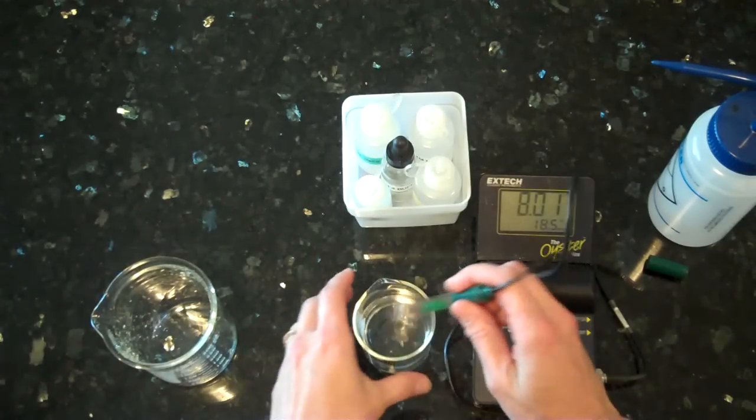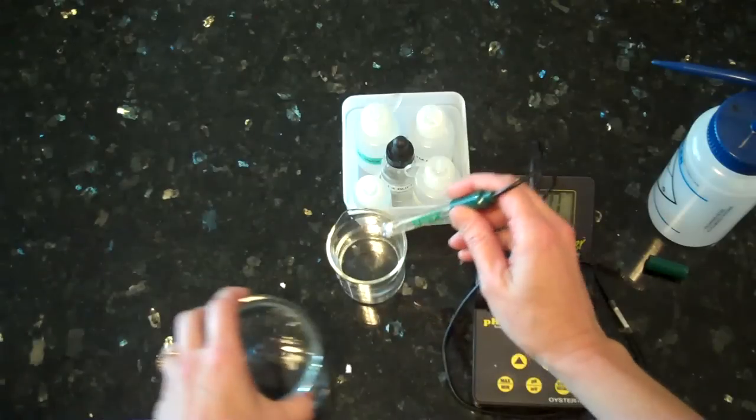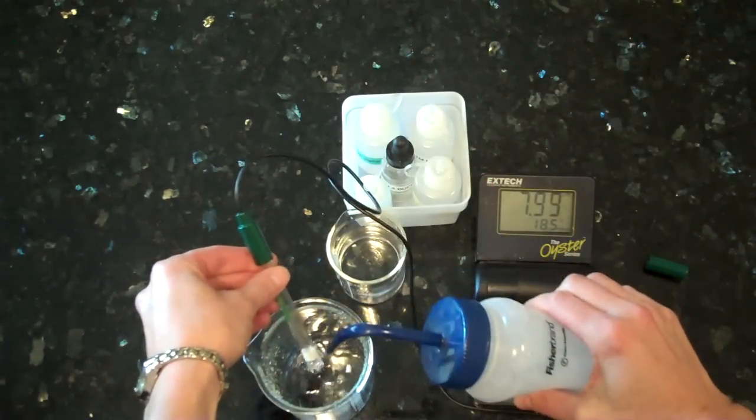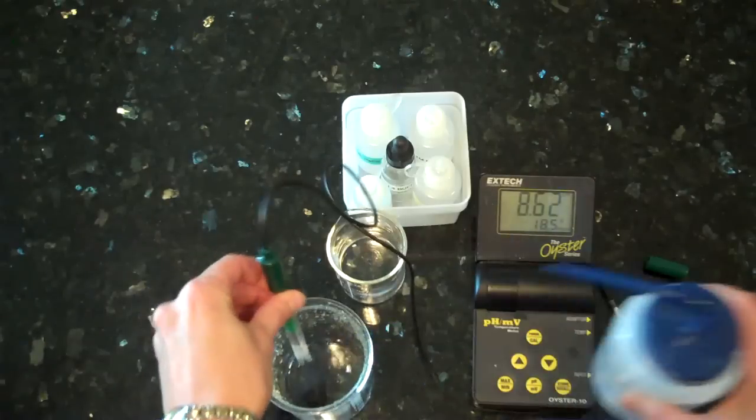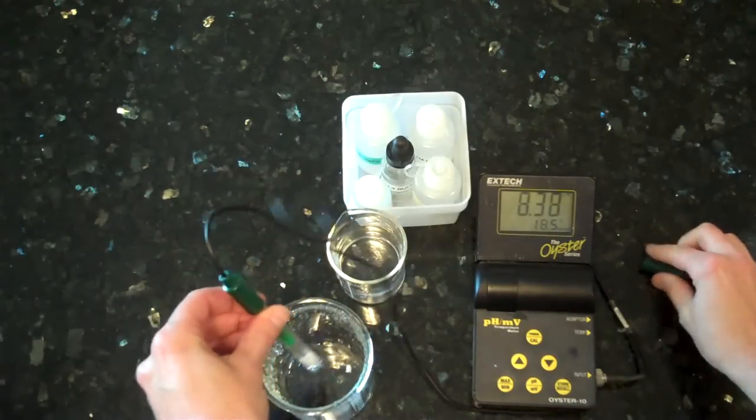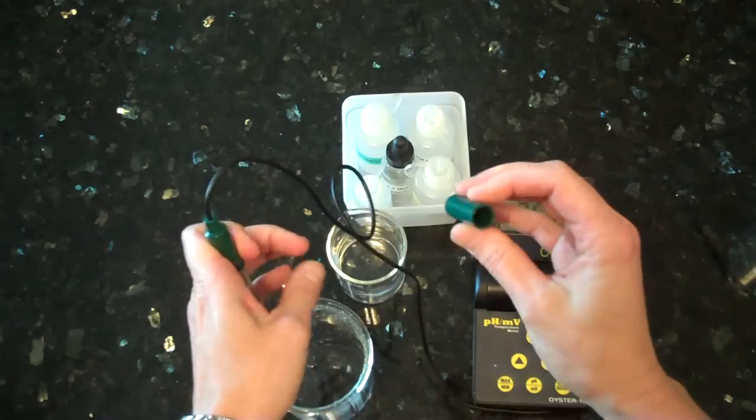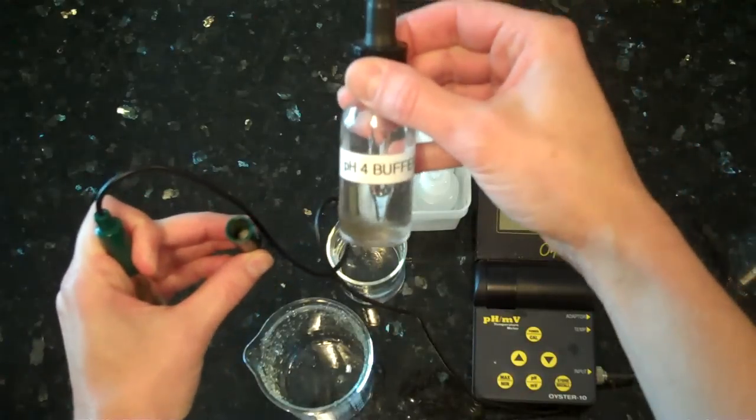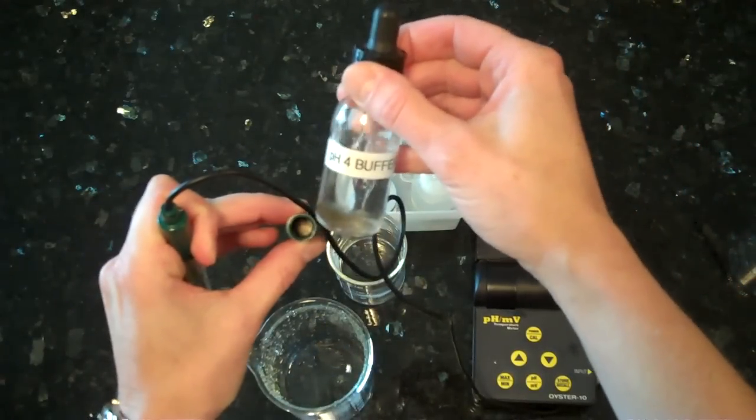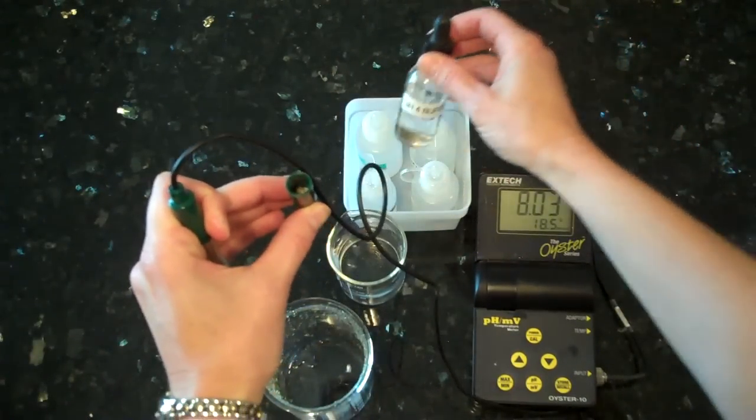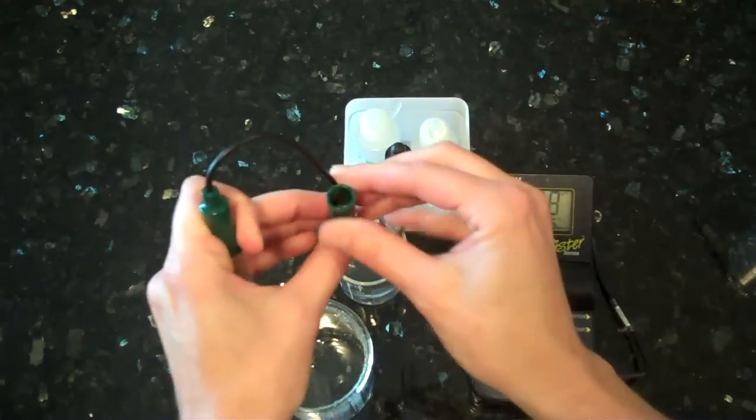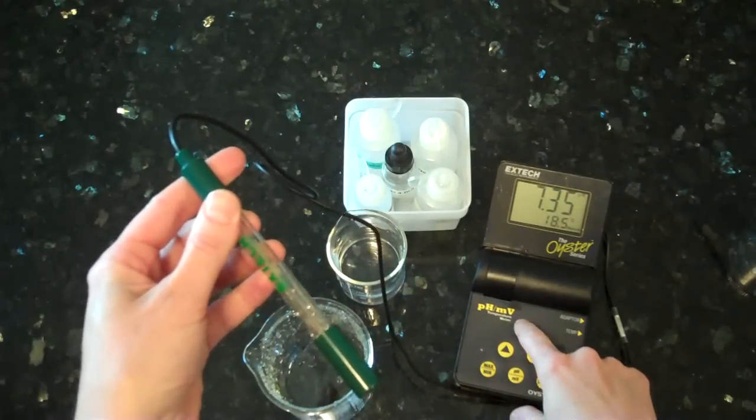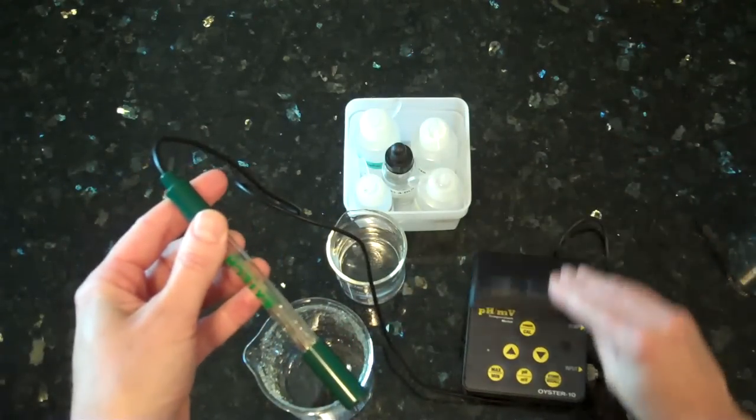the pH meter, you simply take out the probe. You need to rinse it off. I am doing all the rinsing into a waste beaker. You would then take the cap and add a drop or two of pH 4 buffer right into the cap and let it soak into that sponge. You would close the cap, turn off the pH meter, and close it.